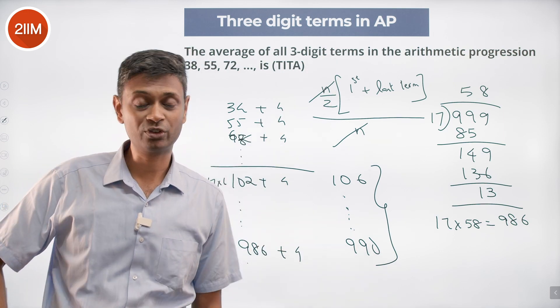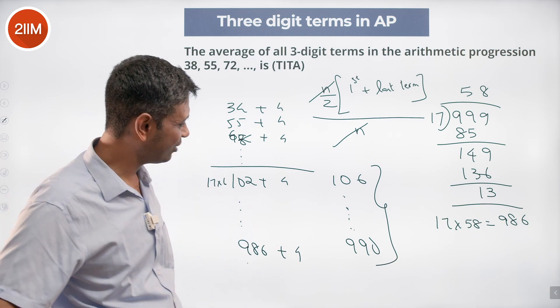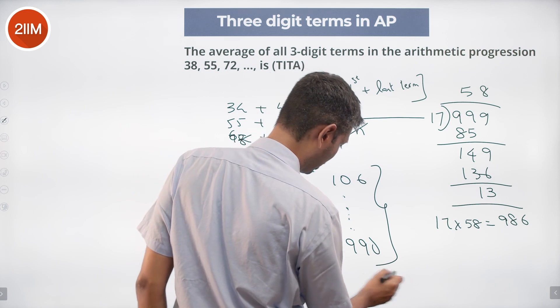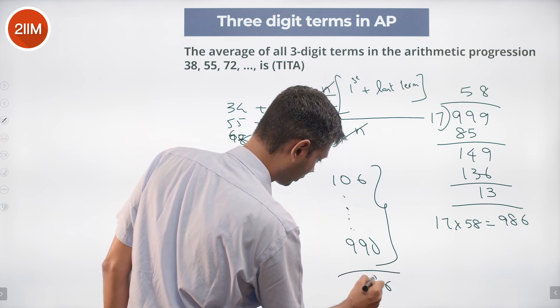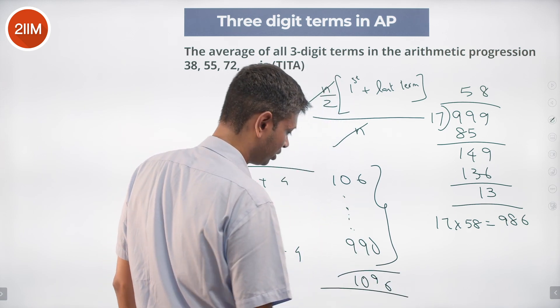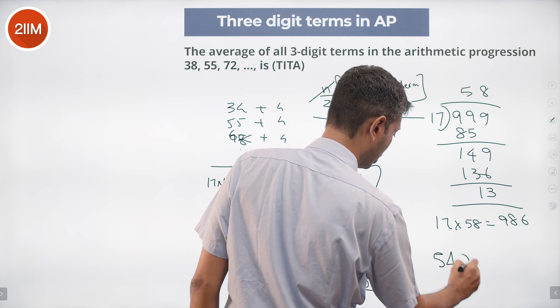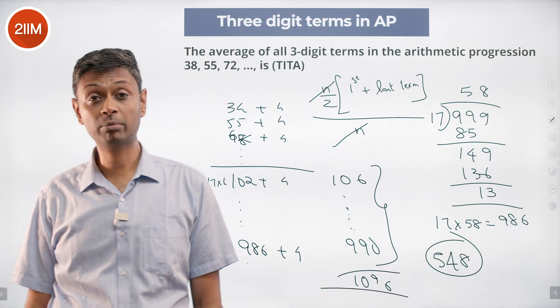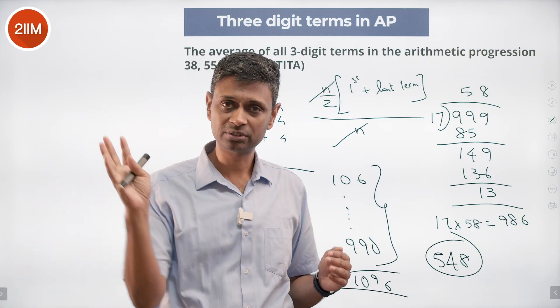So our answer is 990 plus 106 by 2. 990 plus 106, 1096, which is 548. Piece of cake. We know the first term, we know the last term, sum of the first and last term divided by 2 is the average of all, and that's all we need to find.